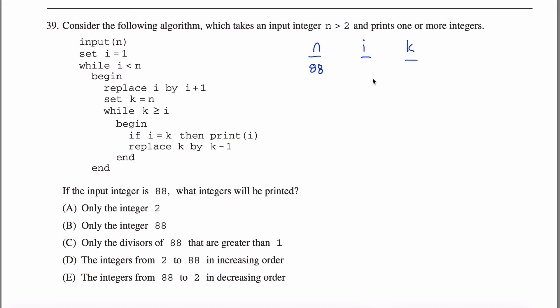Set i equal to 1, no problem. Well, i is less than n. So as long as 1 is less than 88, as long as i is less than n, I am going to do this stuff. So I'm going to stay in this loop until my i is greater than or equal to my n here. Okay, so begin. Start in, get into this next little loop here. Replace i with i plus 1. No problem. Now i is equal to 2. Set k equal to n. No problem. Now k is equal to 88.